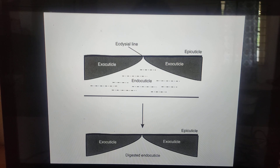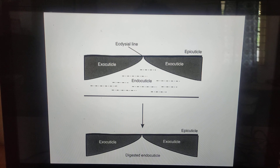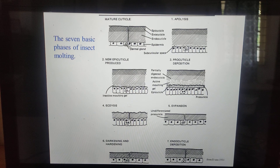After shedding of the old cuticle, the new cuticle — which is soft and milky white — becomes dark and hard through a process known as tanning or sclerotization. This hardening involves the development of cross-links between protein chains. Tanning involves differentiation of the procuticle into the outer hard exocuticle through addition of protein and phenolic substances, and formation of the endocuticle through addition of chitin and protein, increasing in thickness.